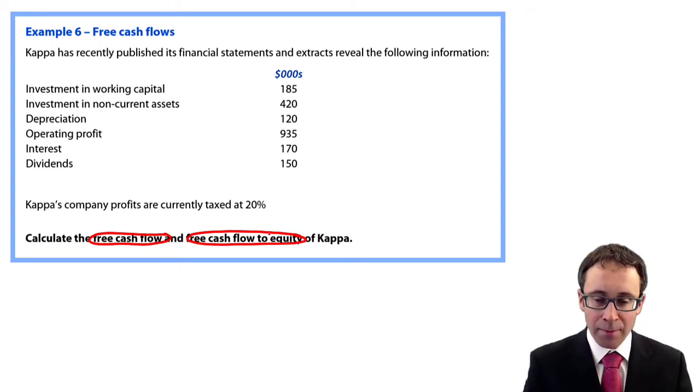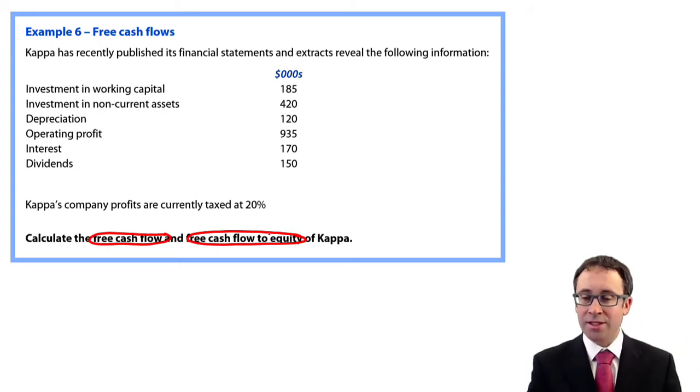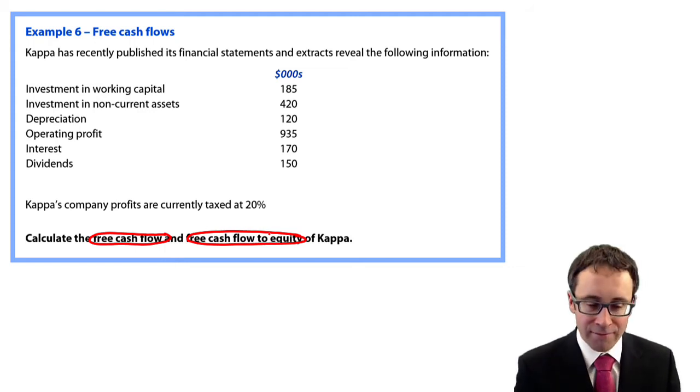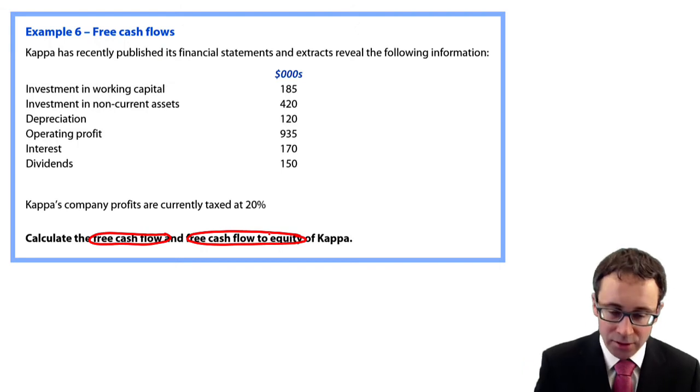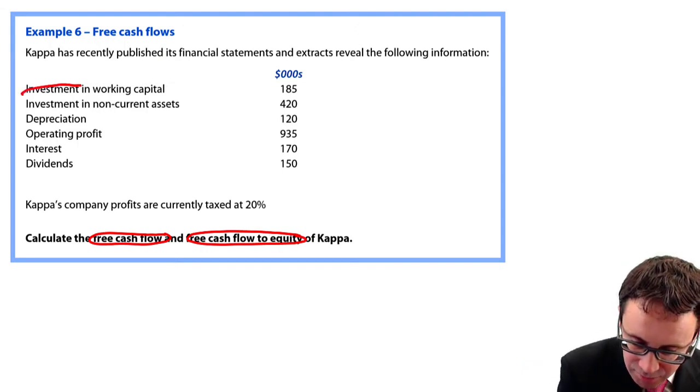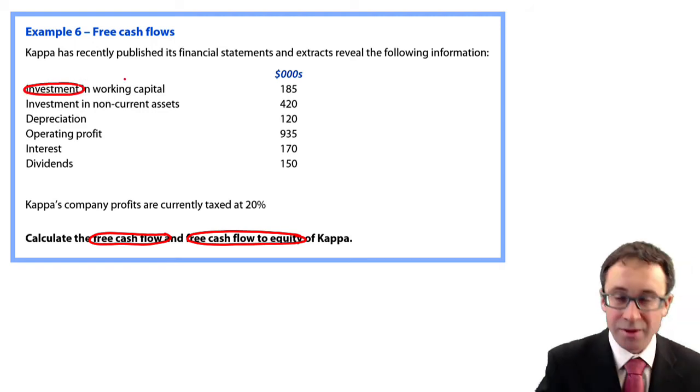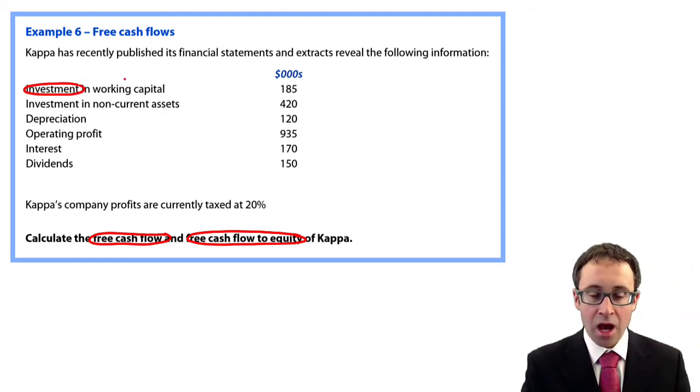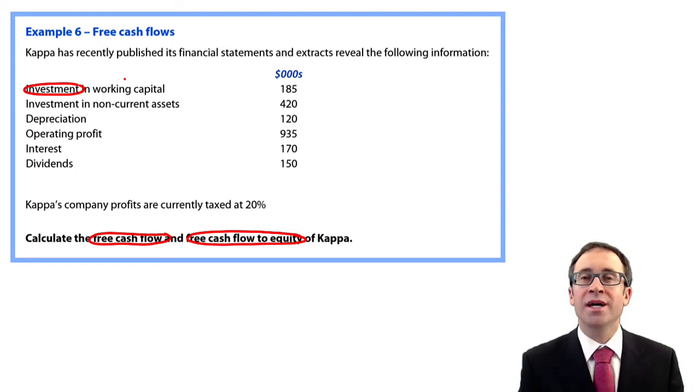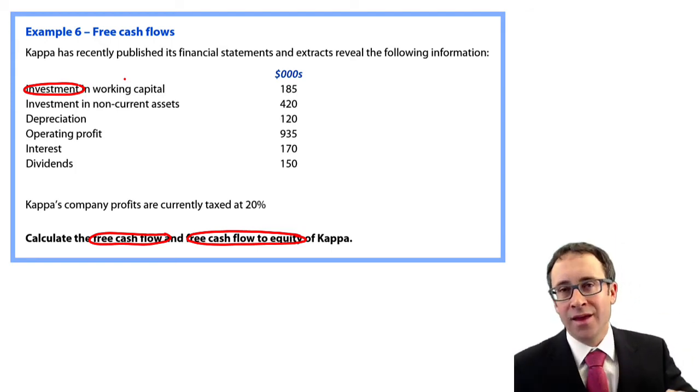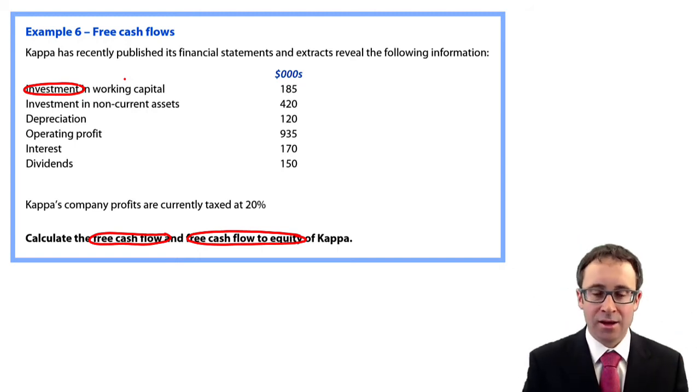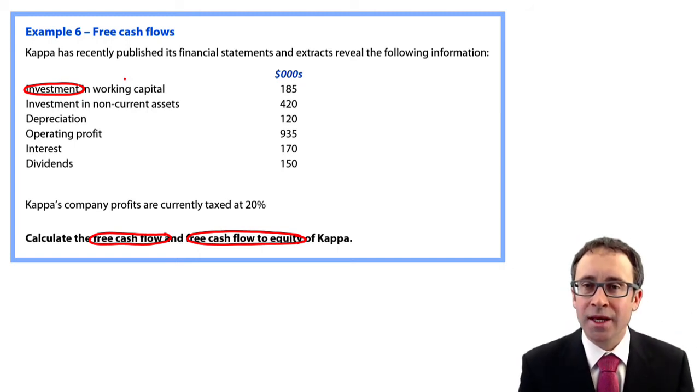So Kappa has recently published its financial statements and extracts reveal the following information. You've got your investments in working capital. So just note that is an investment in working capital, so effectively, that must be an increase. You've also got an investment in non-current assets. That's like a net investment.